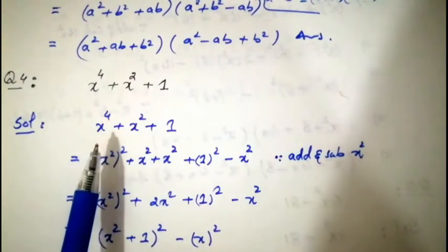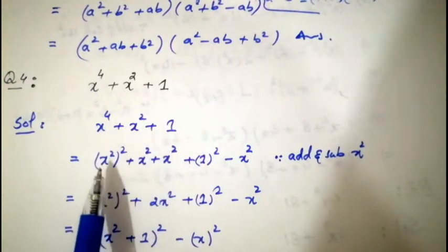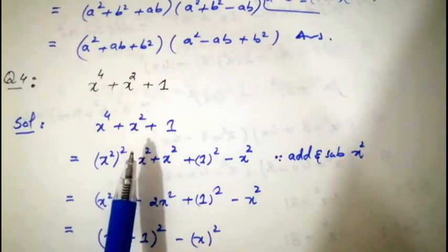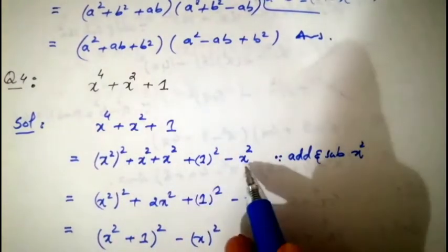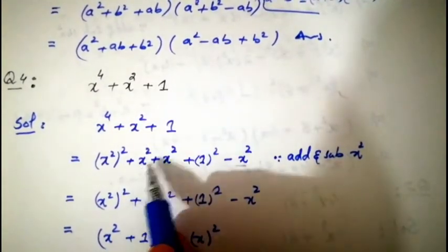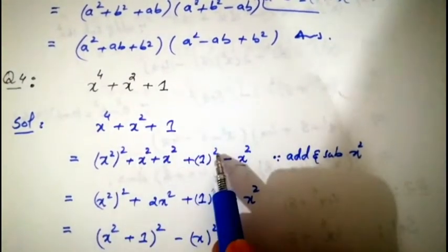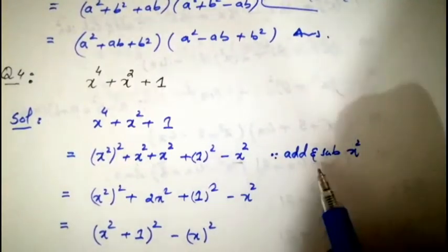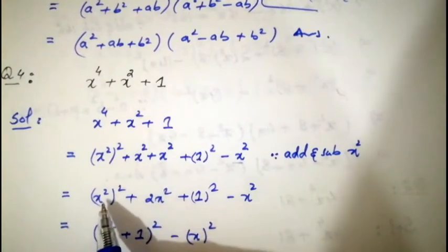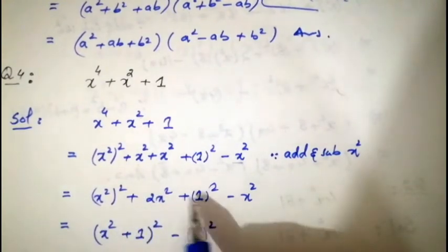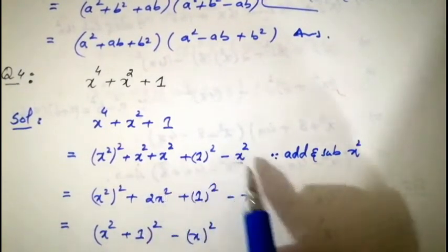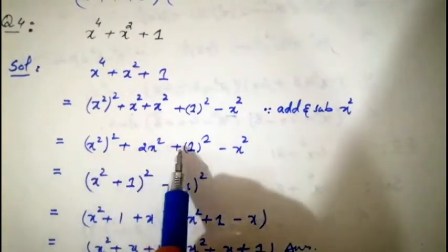Solution: x⁴ + x² + 1. We write x⁴ as (x²)². Now I add and subtract x² for completing the square. So: (x²)² + x² − x² + 1. Taking two x² together: (x²)² + 2x² + 1 − x². The two x² come from the original x² plus the added x², giving 2·x².